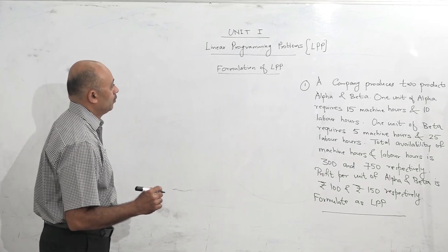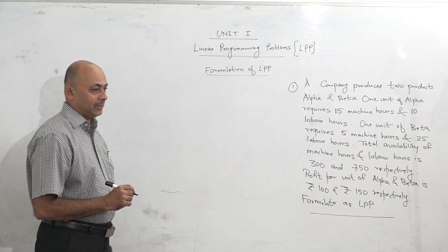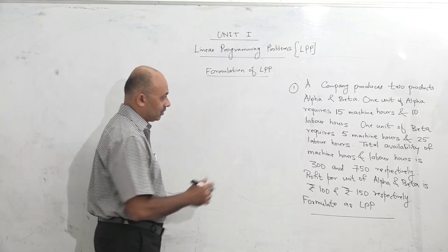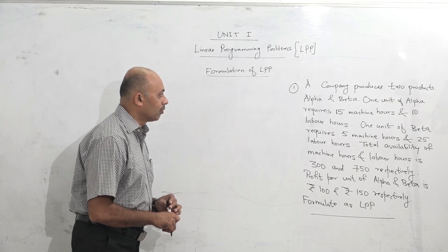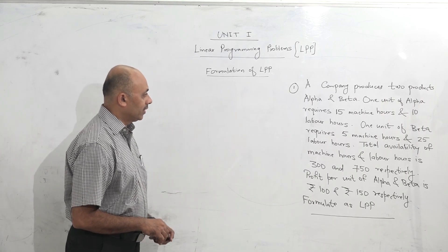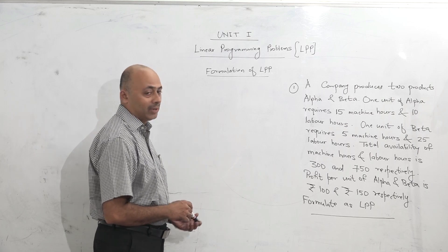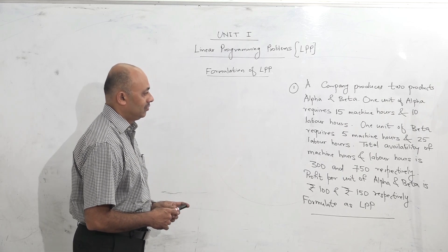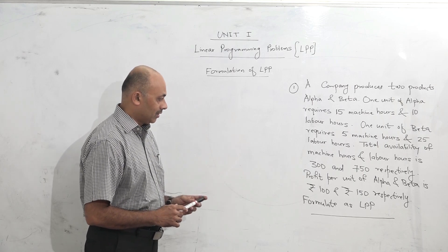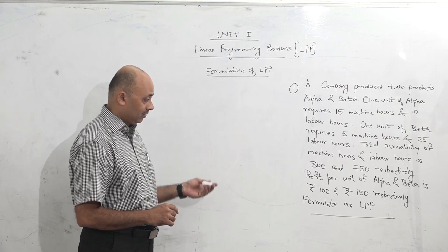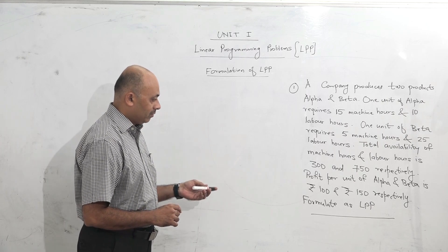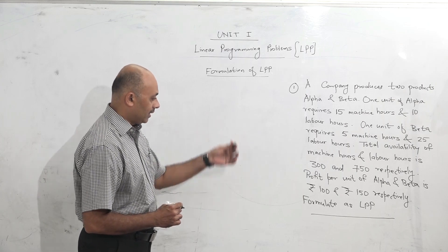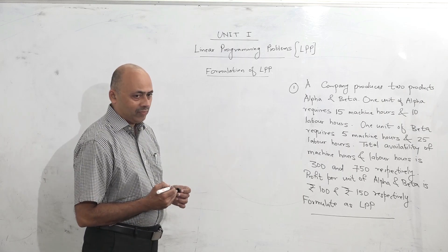In this video we will be seeing how to formulate an LPP. LPP stands for Linear Programming Problems. A company produces two products alpha and beta. One unit of alpha requires 15 machine hours and 10 labor hours. One unit of beta requires 5 machine hours and 25 labor hours. Total availability of machine hours and labor hours is 300 and 750 respectively. Profit per unit of alpha and beta is rupees 100 and 150 respectively. We want to convert this given data into the format of LPP.